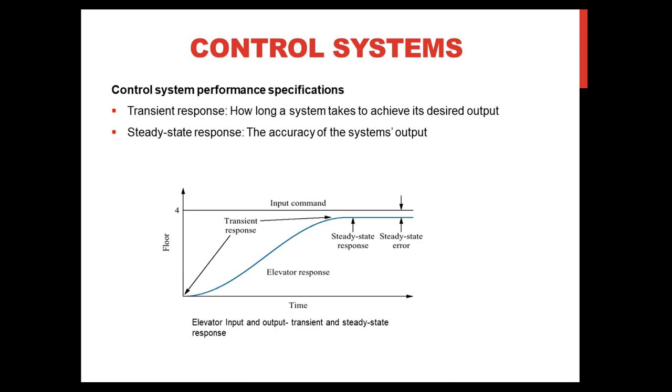Once the elevator comes to a stop or reaches a steady-state, if the elevator is not properly leveled to the fourth floor, this would result in a steady-state error, which means that the output or actual response is not achieved.